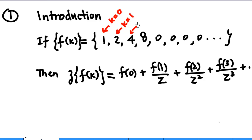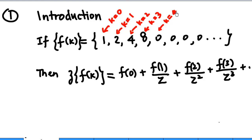When k equals 2, f(k) equals 4; when k equals 3, f(k) equals 8; and then for k equals 4, f(k) equals 0, and so on. The Z-transform of f(k) is equal to f(0) plus f(1) over Z, plus f(2) over Z squared, plus f(3) over Z cubed, and so on.